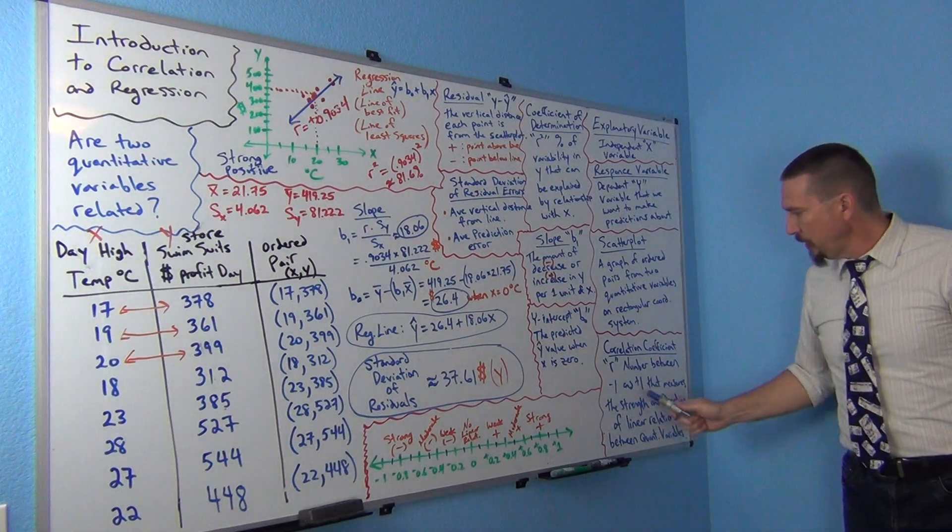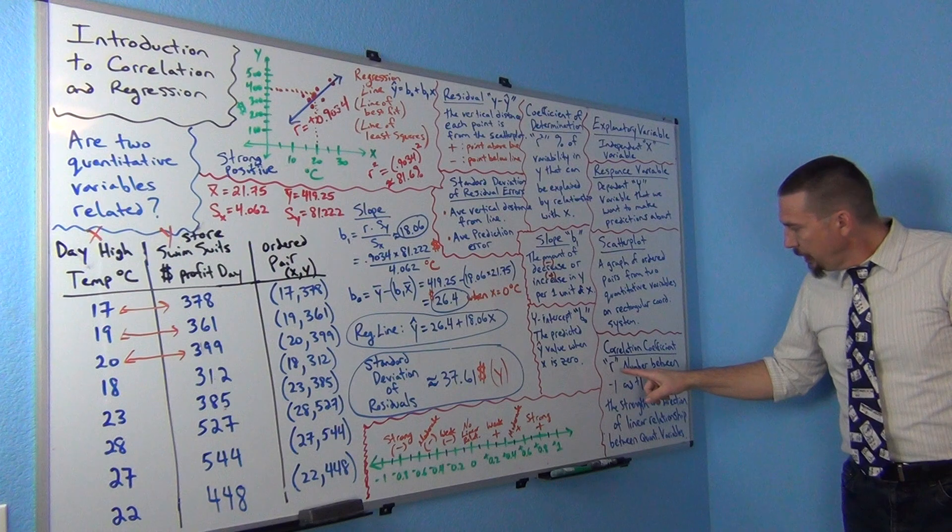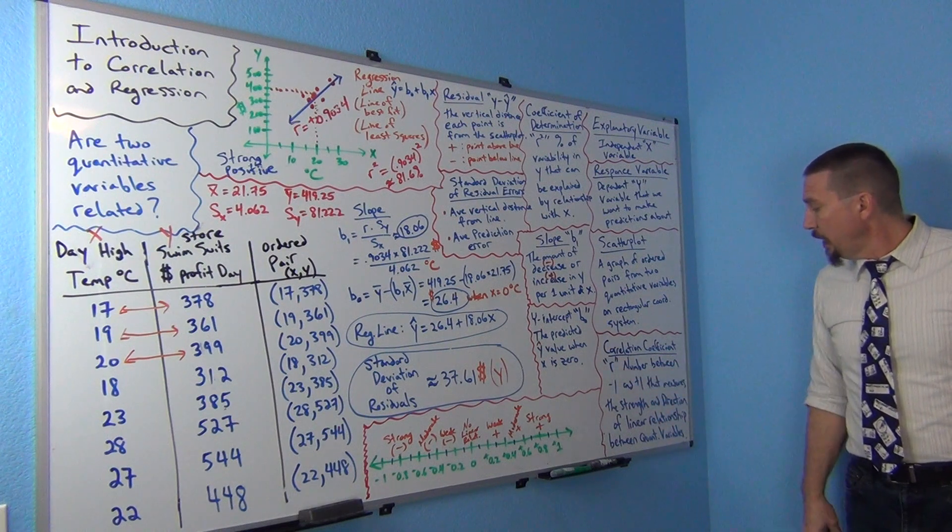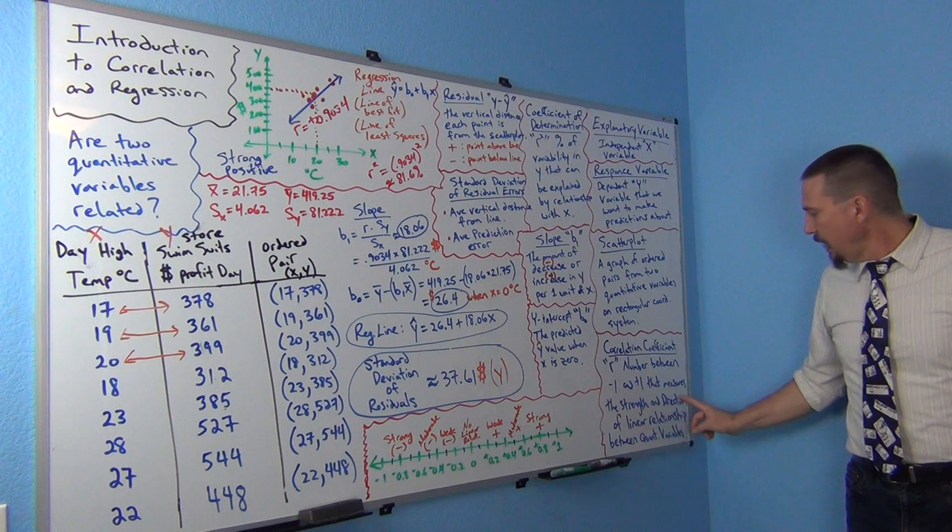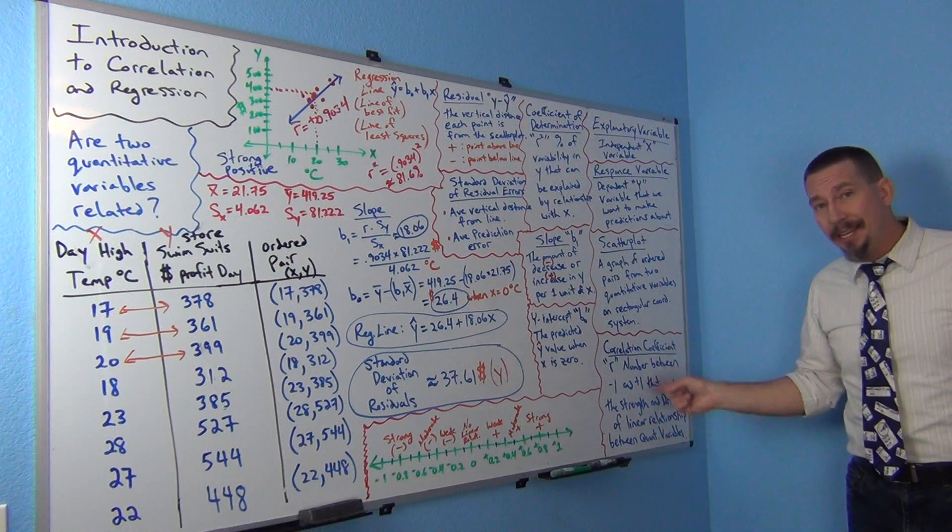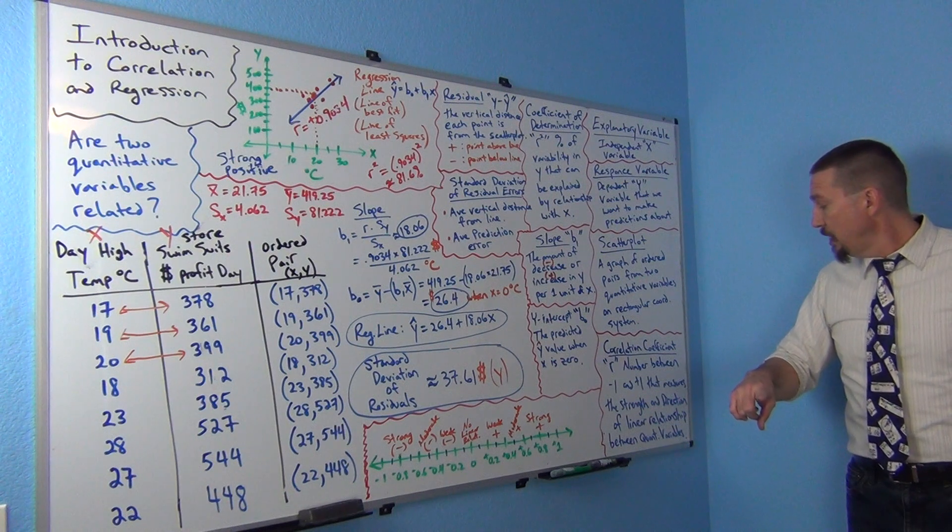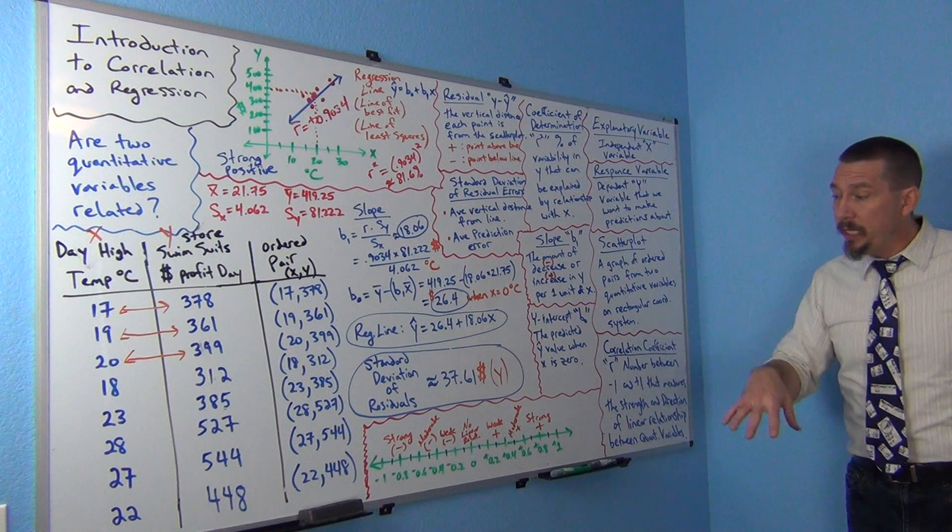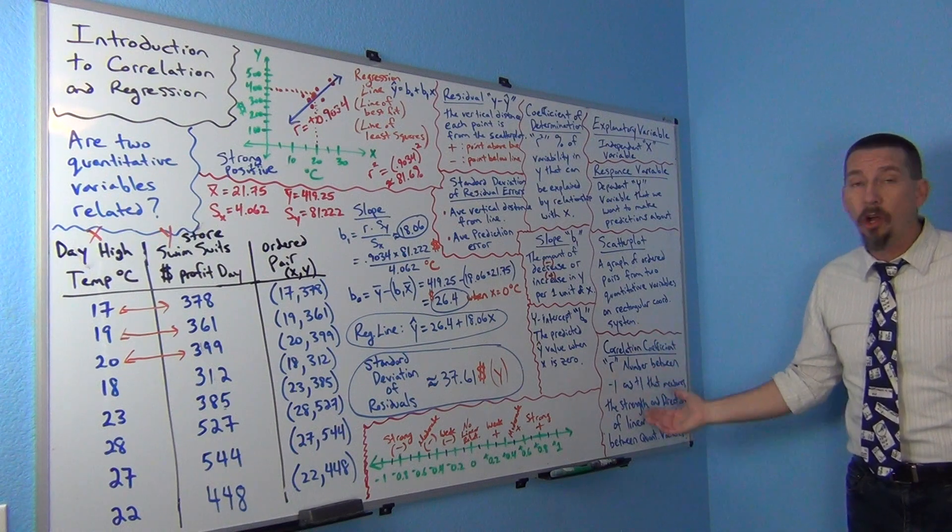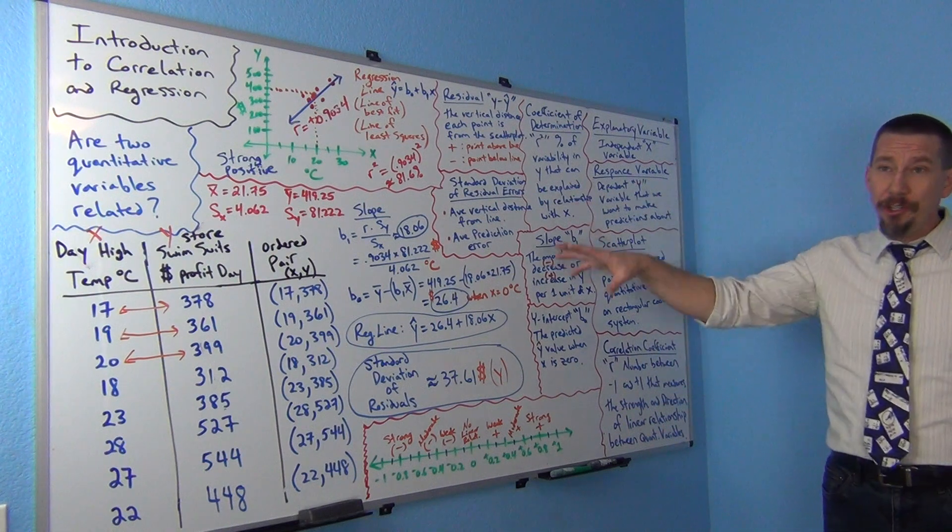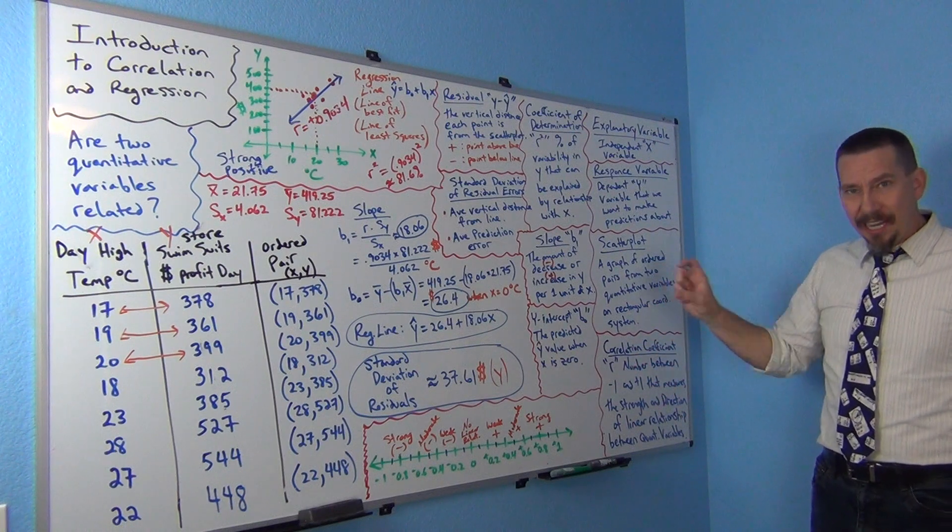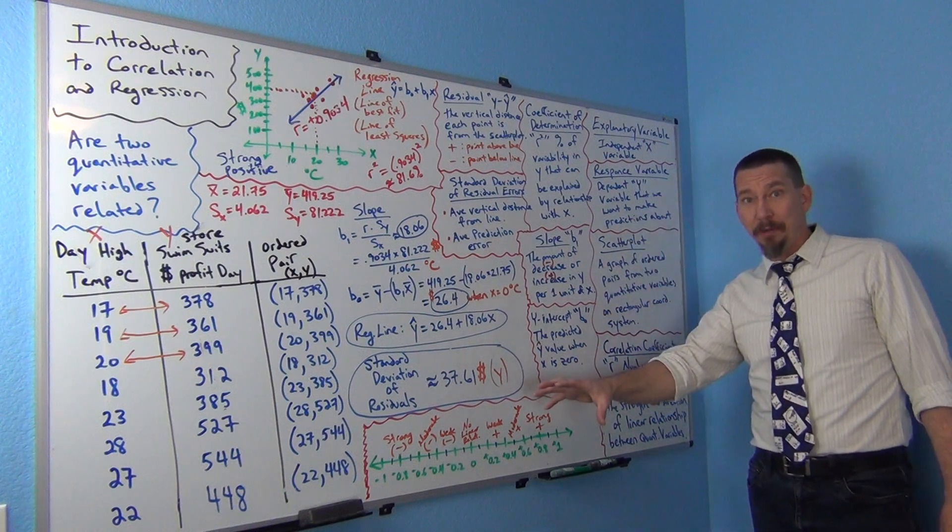So I put the definition over here on the board. So the correlation coefficient or lower case R, is a number between negative one and positive one that measures the strength and the direction of the linear relationship between quantitative variables. So it's going to tell me if it's positive or negative relationship and if it's strong or weak or moderate or no relationship at all. So it's a statistic that the computer calculates. It's a very difficult calculation. It takes a long time to calculate R's. I'm not going to actually even show you how it's calculated today. But it's more important that you can read it, that you understand what it's telling you. Like most things in stats, computers calculate, we interpret, right? We explain it to people.